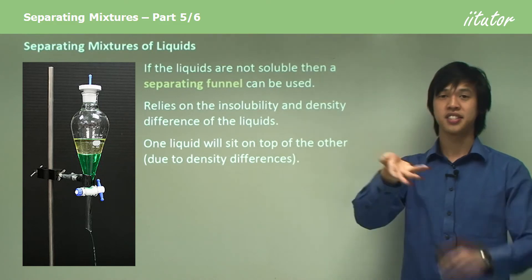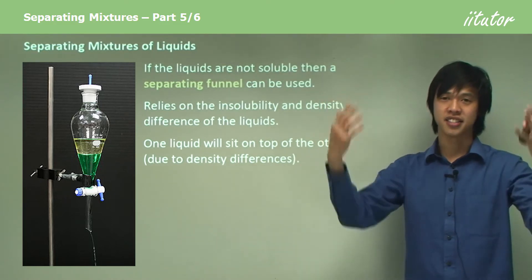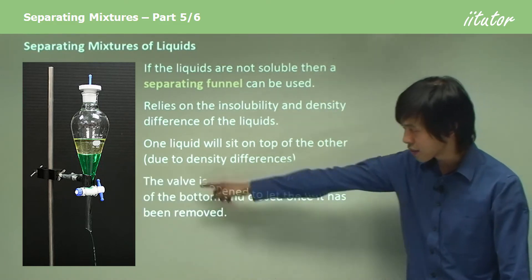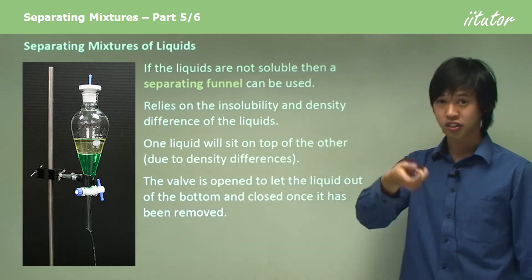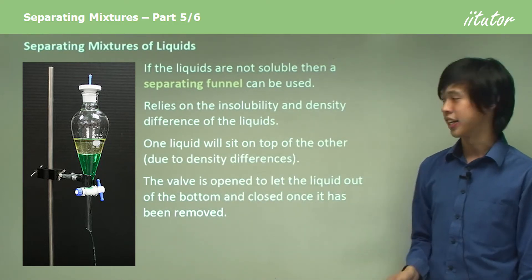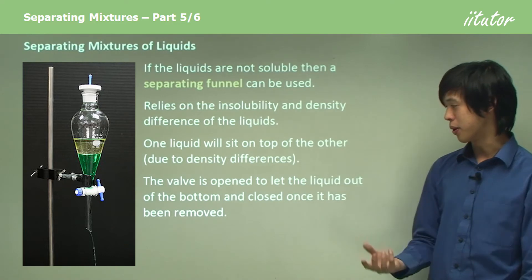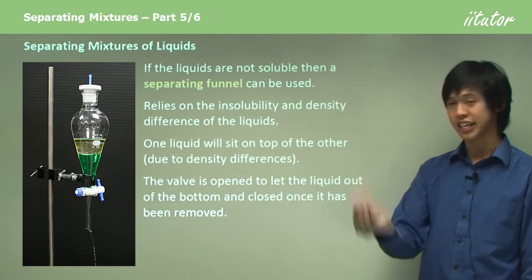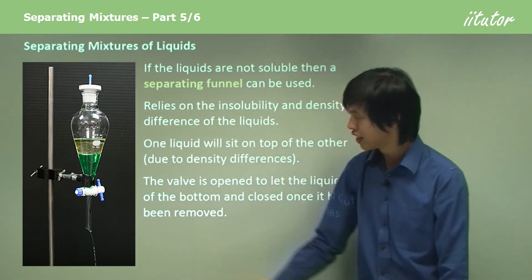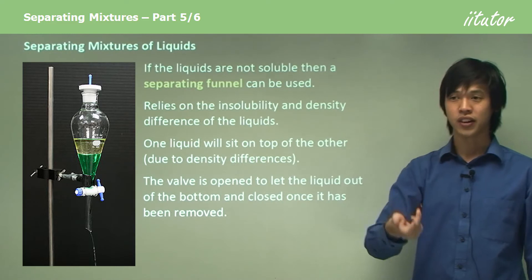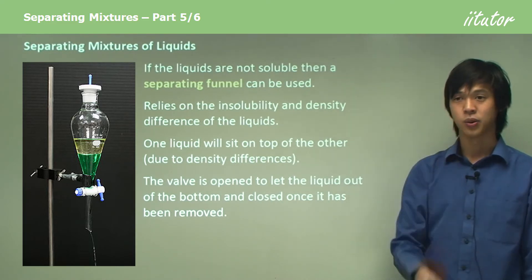Oil is less dense than water so it sits on top. One liquid will sit on top of the other due to the difference in density - because it's less dense it'll sit on top, that's why hot air rises. To separate them, we open the valve at the bottom of the separating funnel and the liquid at the bottom drains out. We then close the valve when we see it's about to hit the oil layer.